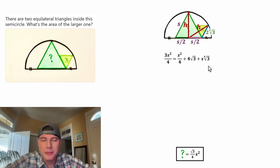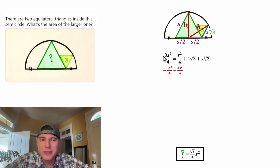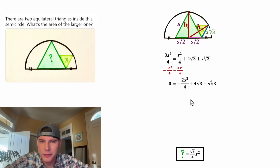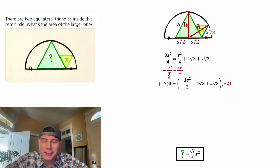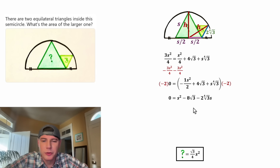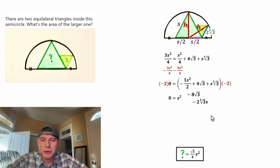Since we have an S squared term and an S term, this is a quadratic. Let's set it all equal to zero by subtracting from both sides. On the left-hand side, three of these minus three of these is zero. On the right-hand side, one minus three gives negative two of these. We simplify 2 over 4 to one half, and to get rid of the fraction, let's multiply both sides by negative two. This gives us S squared minus 8 root 3 minus 2 times the fourth root of 3 times S.